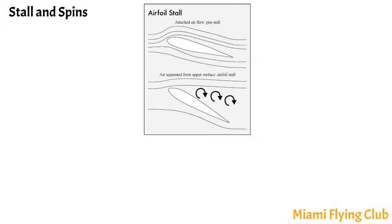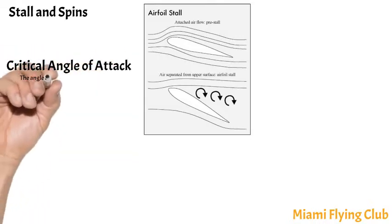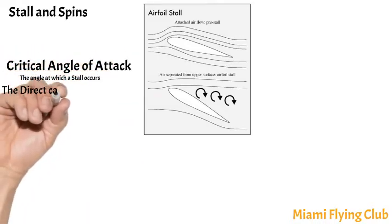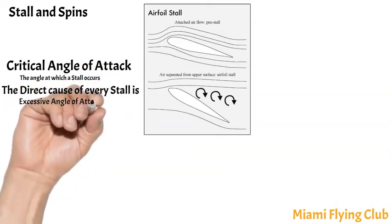At an angle of attack of approximately 18 to 20 degrees for most wings, turbulence over the upper wing surface decreases lift so drastically that flight can no longer be sustained and the wing stalls. The critical angle of attack is the angle at which a stall occurs. The direct cause of every stall is excessive angle of attack.